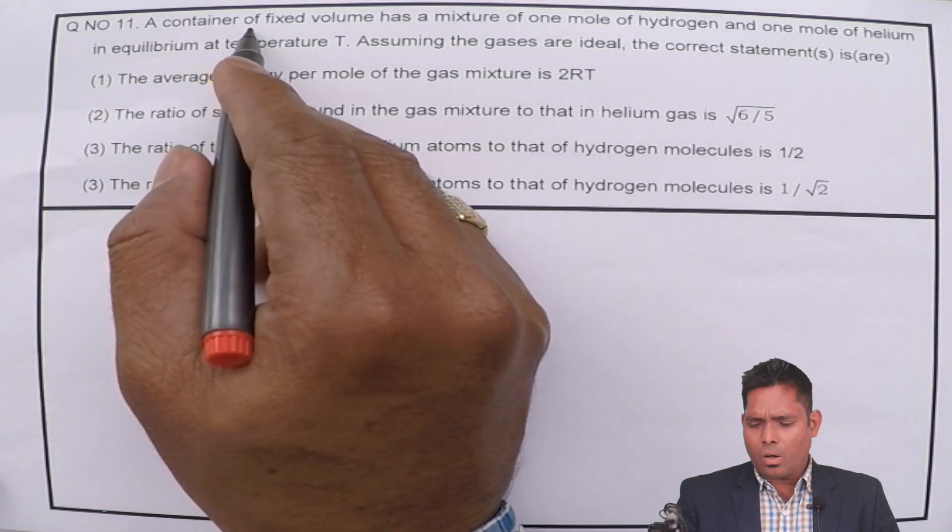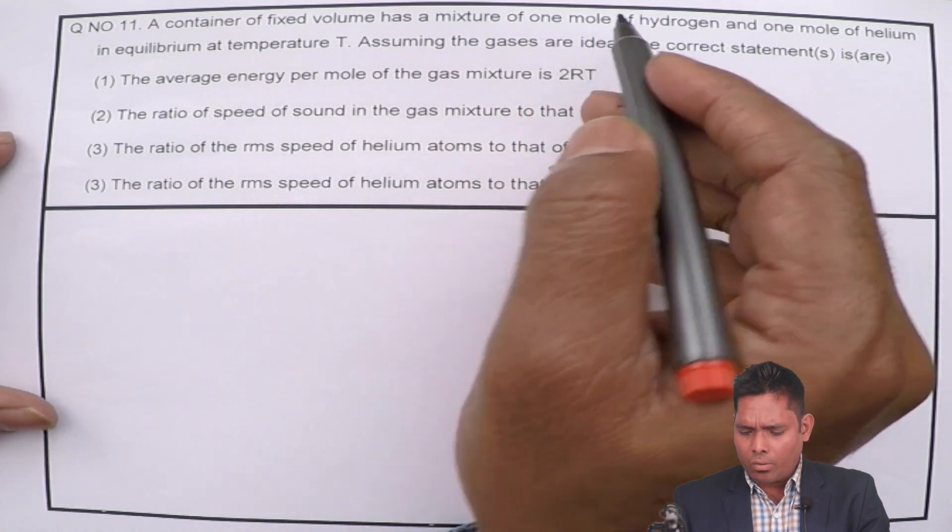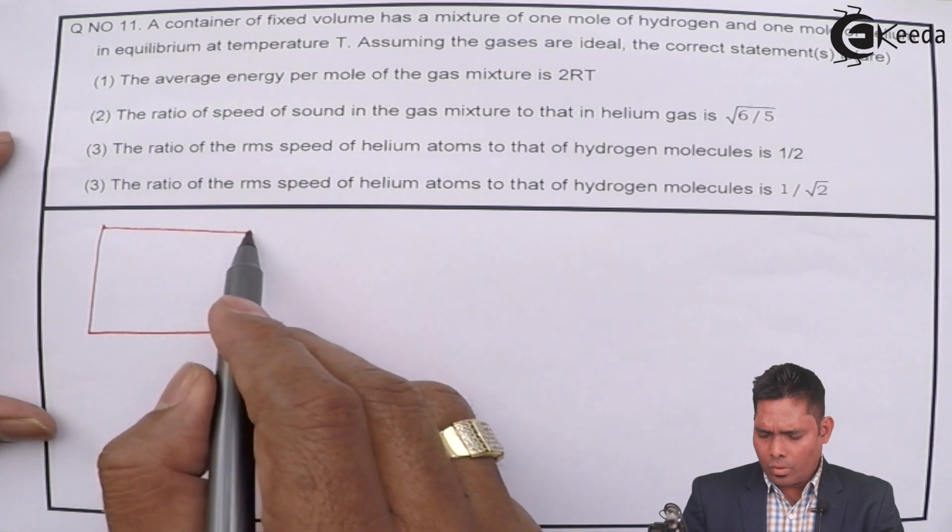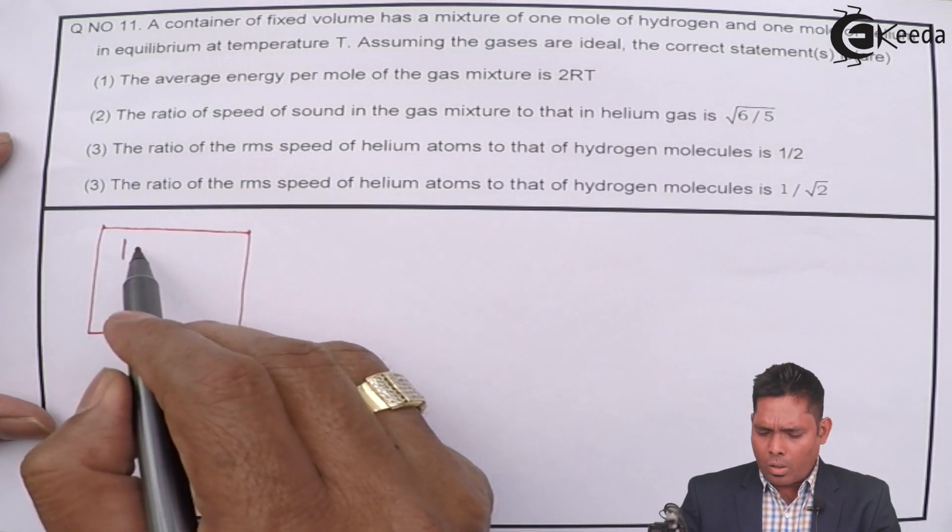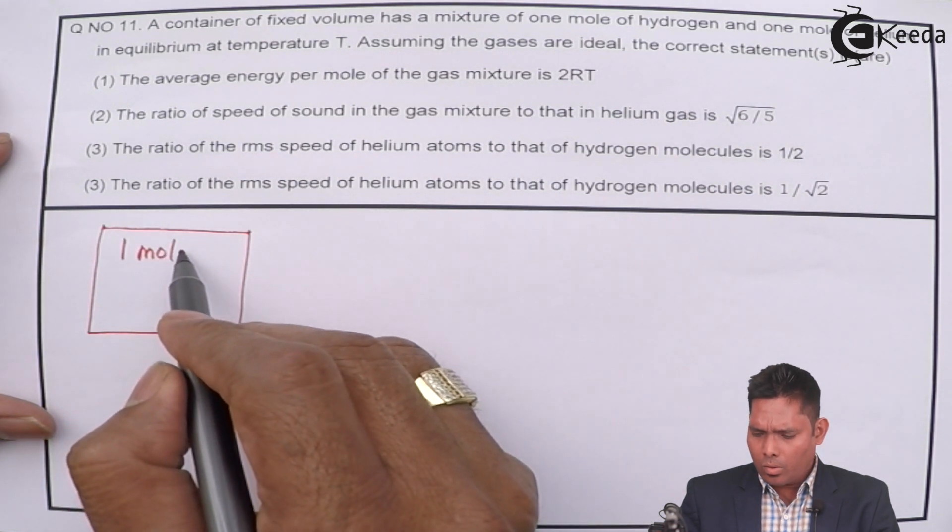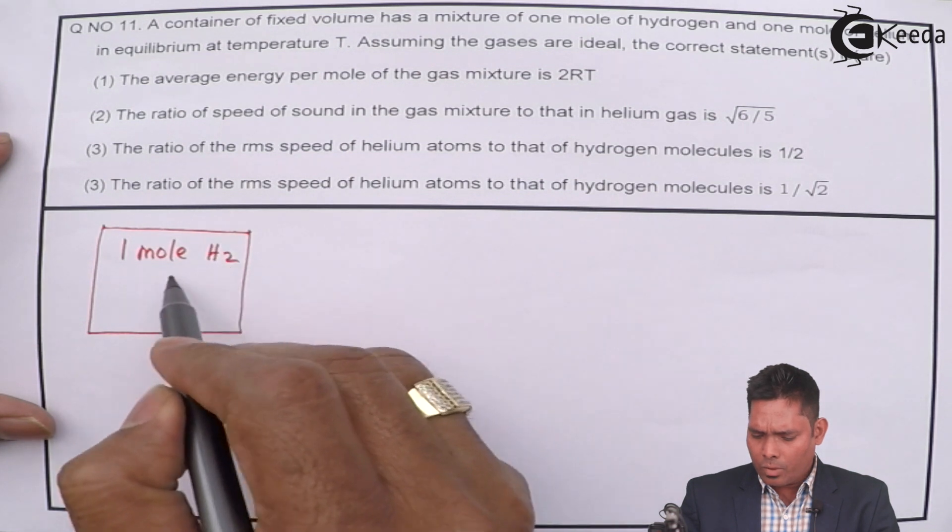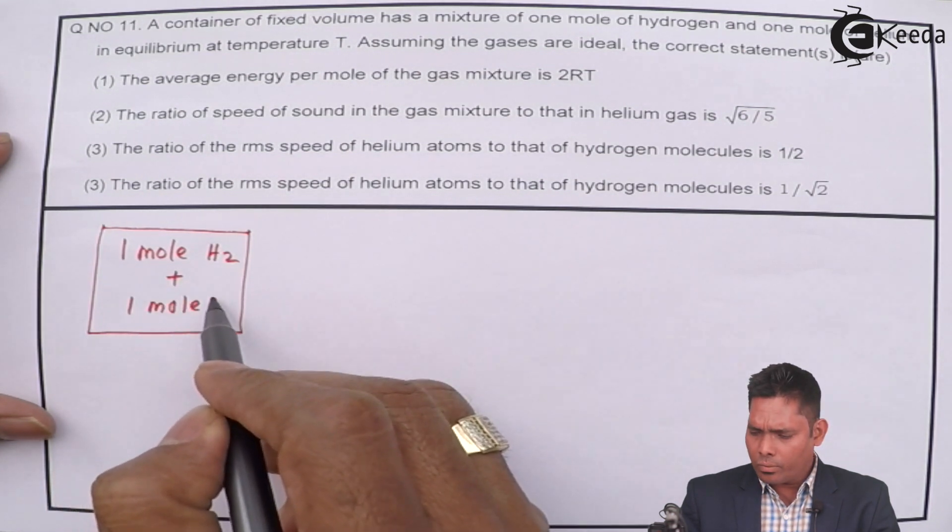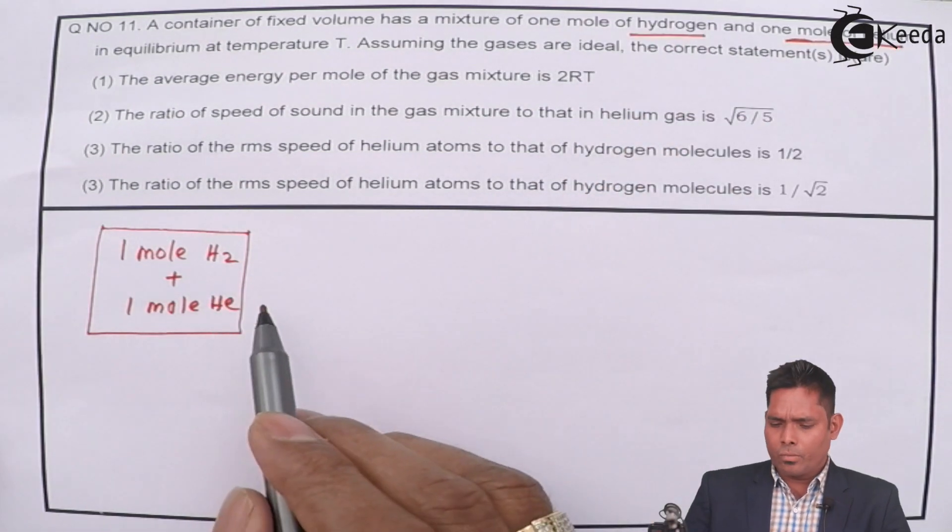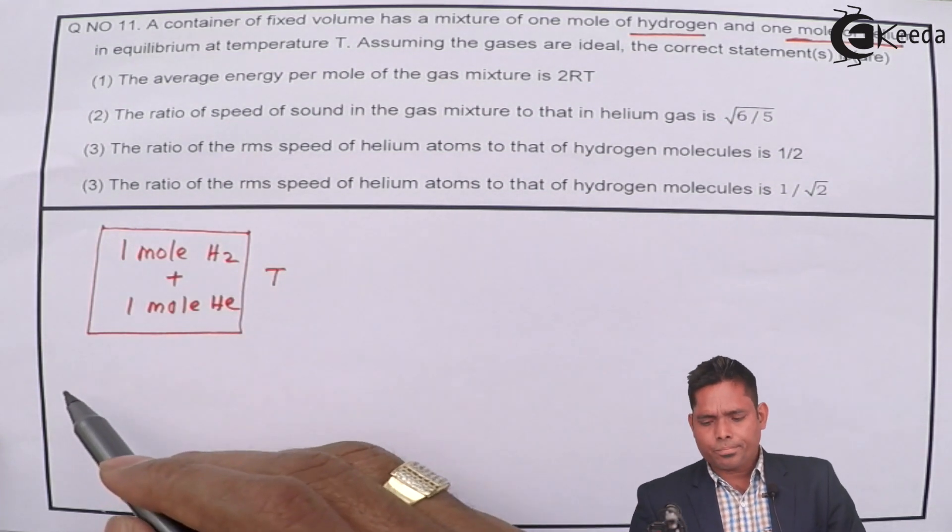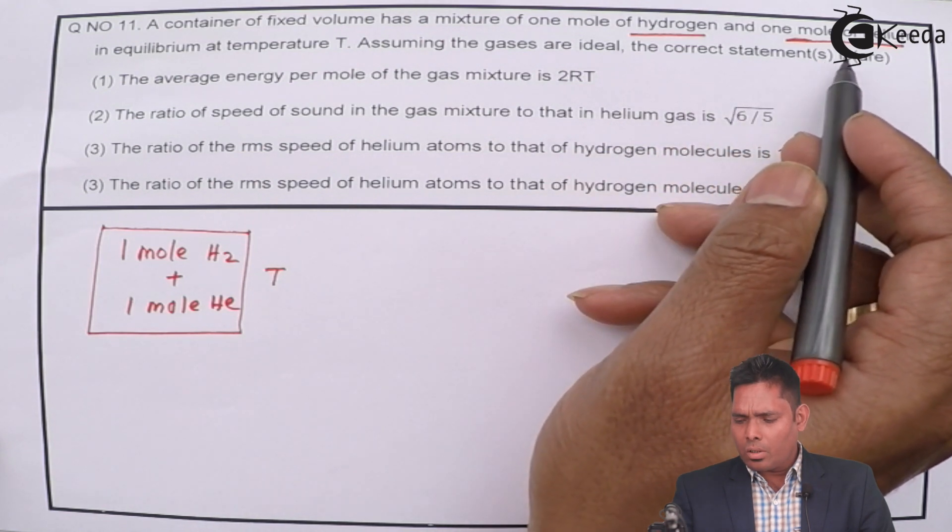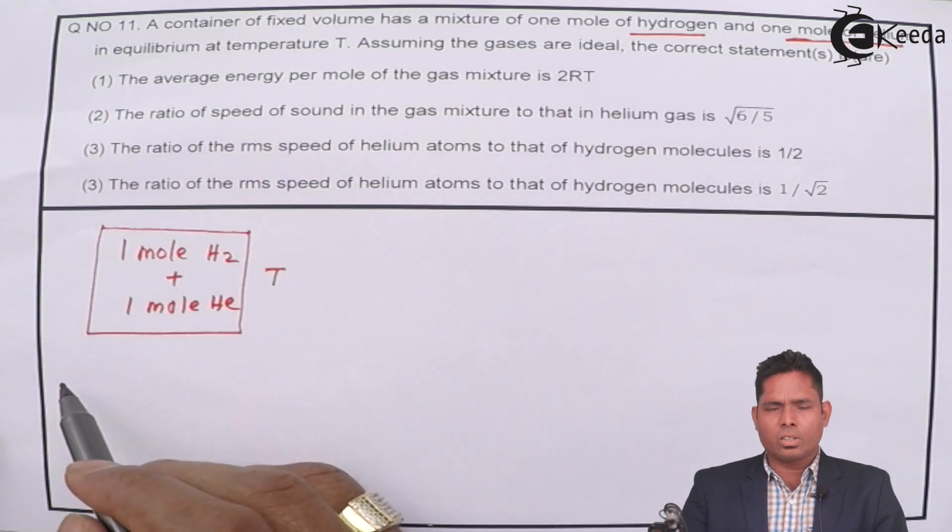A container of fixed volume has a mixture of one mole of hydrogen and one mole of helium in equilibrium at temperature T. Assuming the gases are ideal, the correct statements are - which of the following statements are correct?